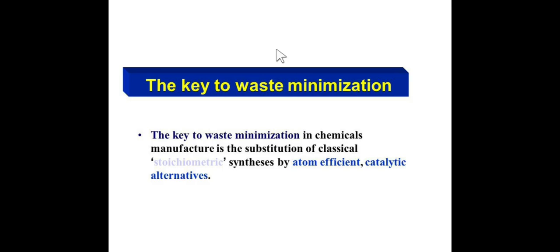The key to waste minimization in chemical manufacture is the substitution of classic stoichiometric synthesis by atom economy, atom efficiency, catalytic alternatives, and minimization of energy resources. This is why green solvents or ionic liquids are very valuable for organic synthesis.